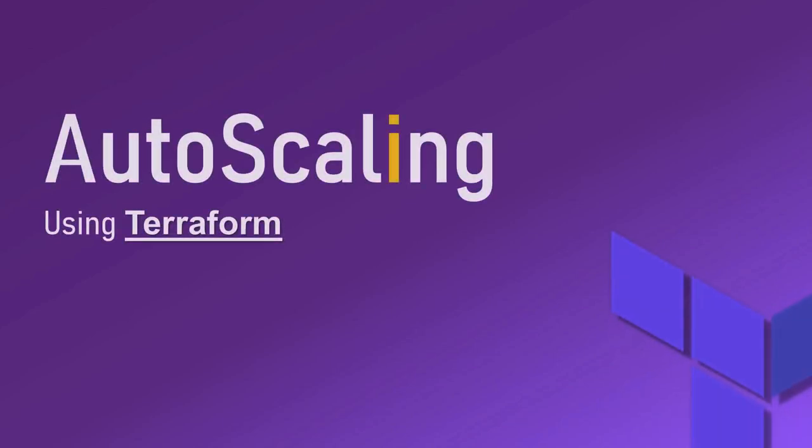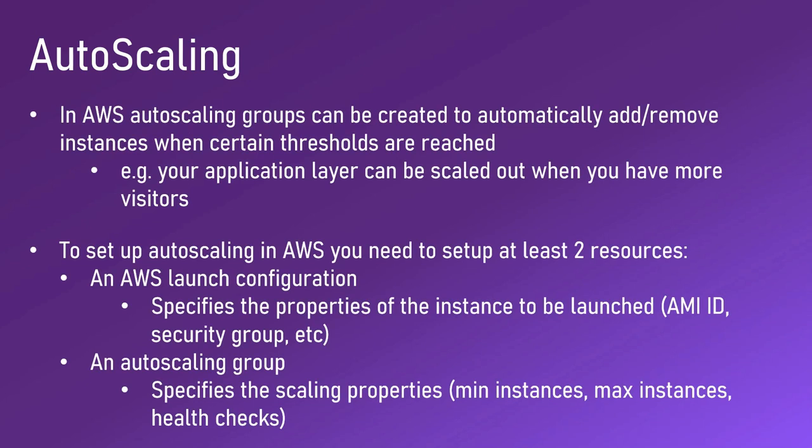Welcome to this channel. In this session we are going to do auto scaling instances in AWS using Terraform. First of all, what is AWS auto scaling? In AWS, auto scaling groups can be created to automatically add or remove instances when certain thresholds are reached. For example, your application layer can be scaled out when you have more visitors. This is really helpful.